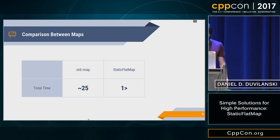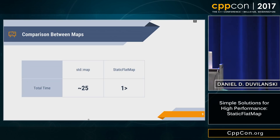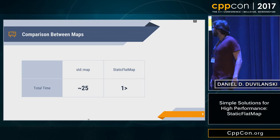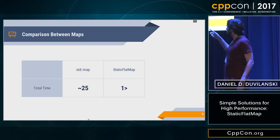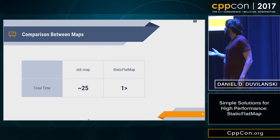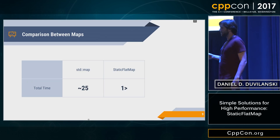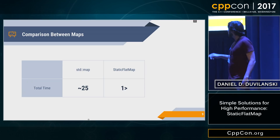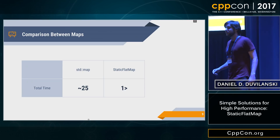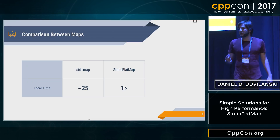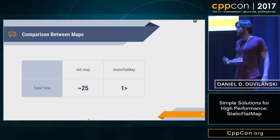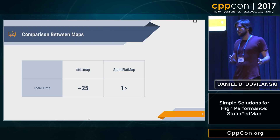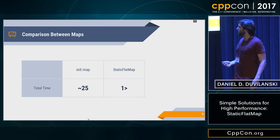These are the measurements for the function I showed before. The copy and everything for the STD map took around 25 microseconds. The new Static Flat Map took less than a single microsecond, which made it go from unusable to actually quite nice.